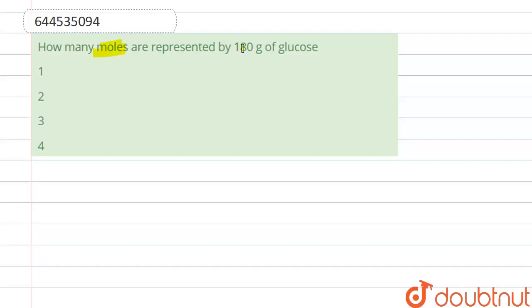So, mass of glucose is given, that is 180 grams. And we know that the molar mass of glucose is also 180 grams per mole.